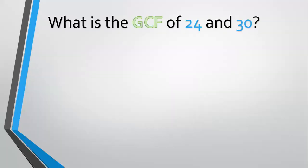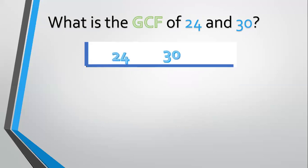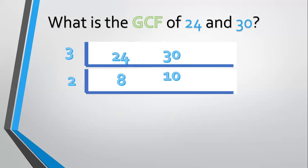Another example — how about 24 and 30? List them: 24 and 30. The common factor is 3. 24 divided by 3 equals 8. 30 divided by 3 equals 10. There's still a common factor — that is 2. 8 divided by 2 equals 4. 10 divided by 2 equals 5. Now 4 and 5 have no common factor. The GCF of 24 and 30 is equal to 6: 3 times 2 equals 6.